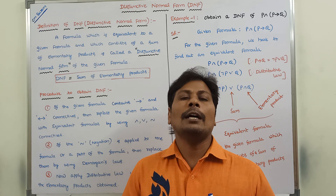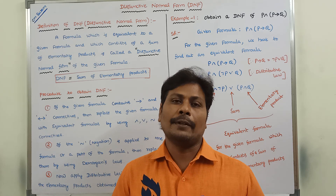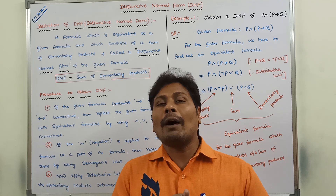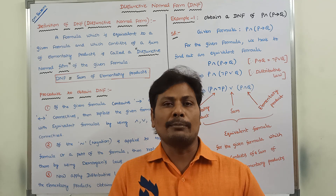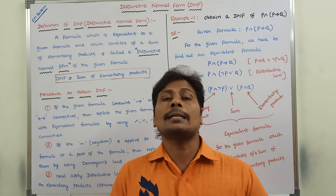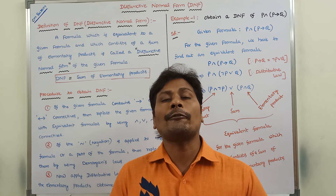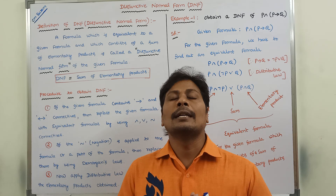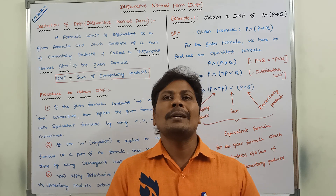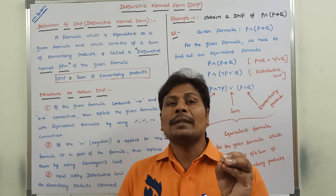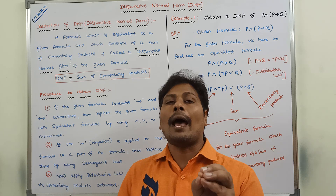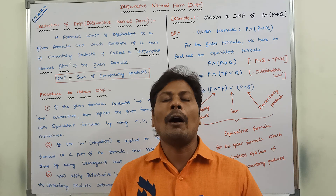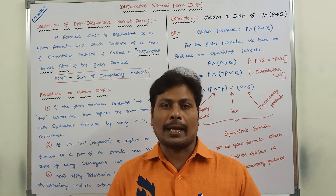Now, what is a DNF? A formula which is equivalent to a given formula and which consists of a sum of elementary products is called a disjunctive normal form. Disjunctive normal form can be simply called as sum of elementary products.